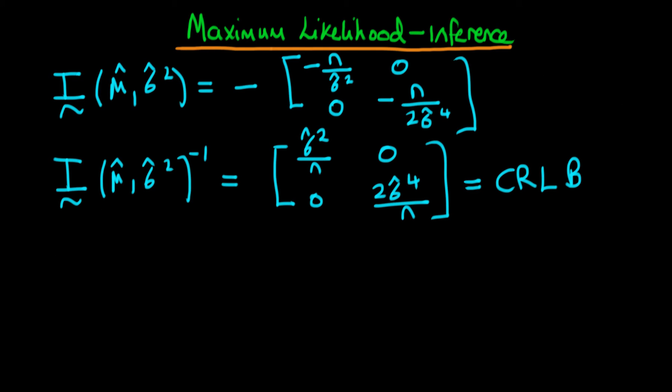If we define a parameter vector which I'm going to call here theta hat, as having one component being mu hat and the other component being sigma hat squared, so this is our maximum likelihood estimator for the parameter vector which we're talking about in this particular problem.